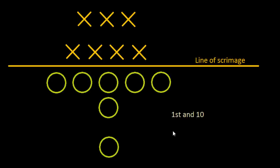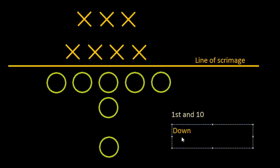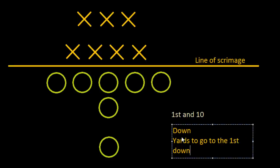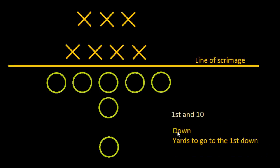The first term is something called a 'down,' and the second number is the yards to go to the first down. A down is basically a try or a chance for the offense to gain as many yards as they can to get to the end zone — because their goal is to get to the end zone and score a touchdown, which gives them six points. The offensive team has four downs to gain ten yards.